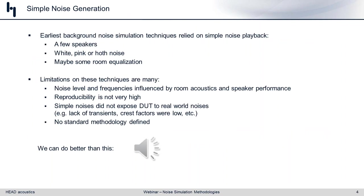Back in the early days, people were looking to stress noise suppression technology that started coming around in the 90s. The quick solution was to take a couple of speakers, set them up in a room — maybe four speakers, one in each corner — and play out white noise or pink noise. For those that were a little bit more sophisticated, they would look at some room equalization and apply that in advance.